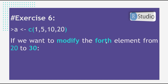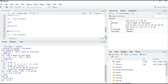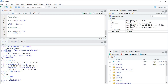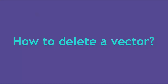To modify a vector, for example changing the fourth element from 20 to 30, write a[4] <- 30. We are calling the fourth element and assigning 30 to it, then printing it. We get 1, 5, 10, and 30 instead of 20. Let's go to R — we create the vector with 1, 5, 10, 20, change the fourth element to 30, print it, and we get 30.